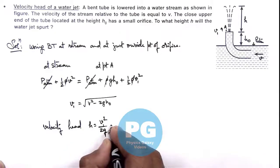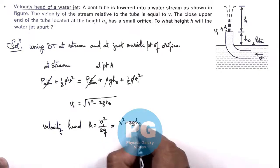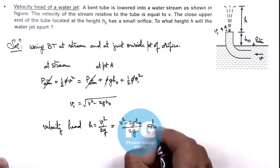So the relation we are getting, the height to which water is getting raised is v square minus 2g h_not divided by 2g. That's the result of this problem.